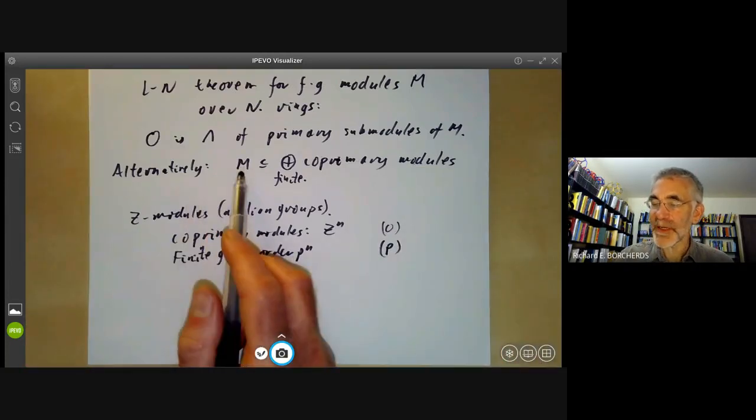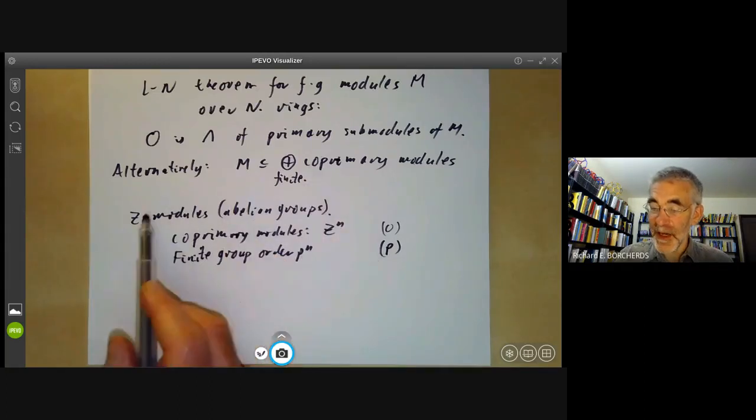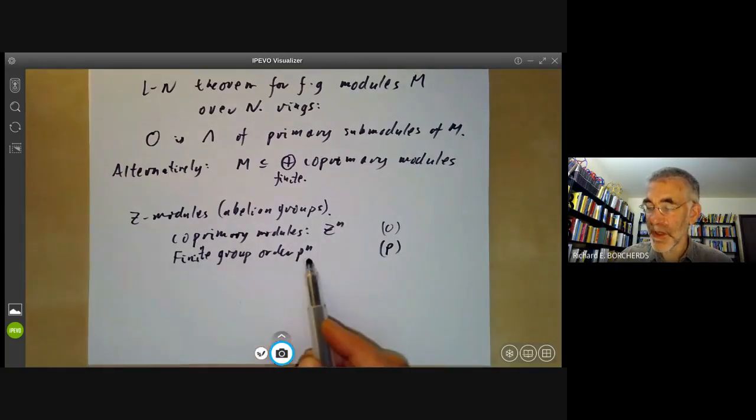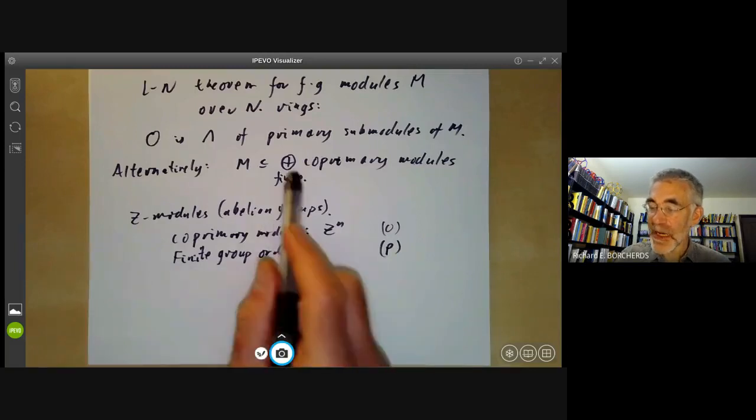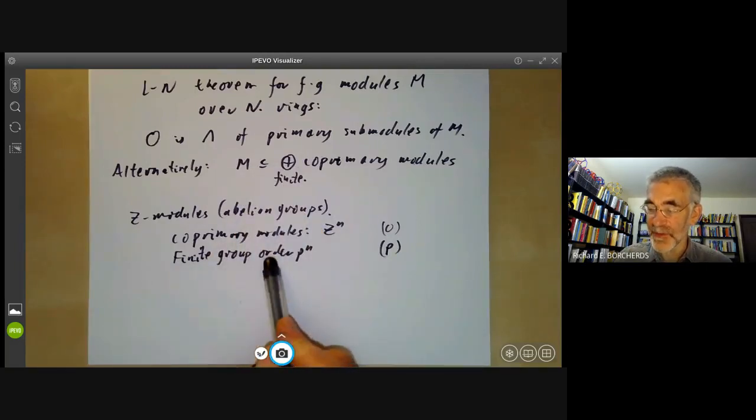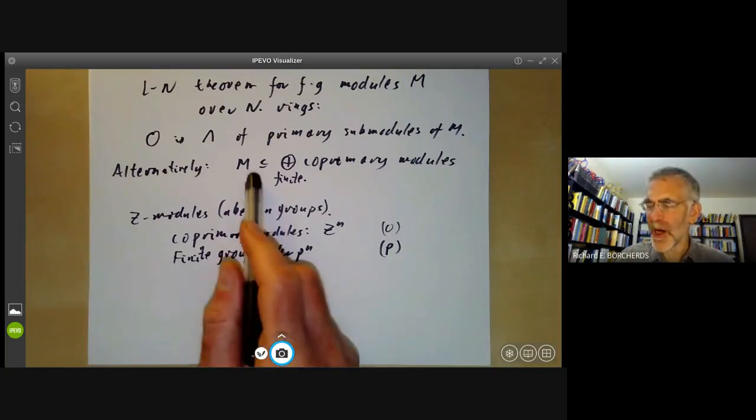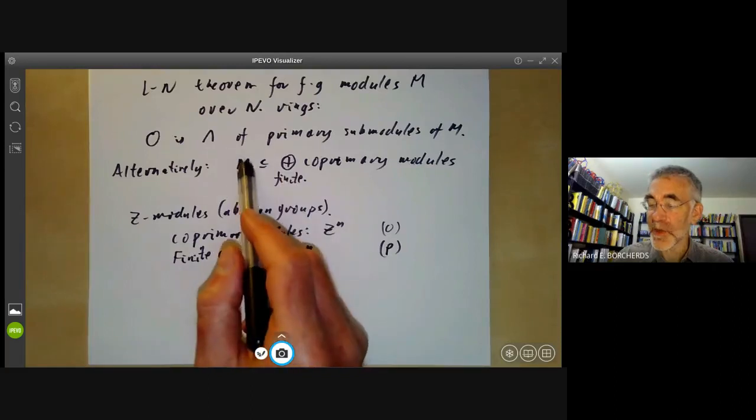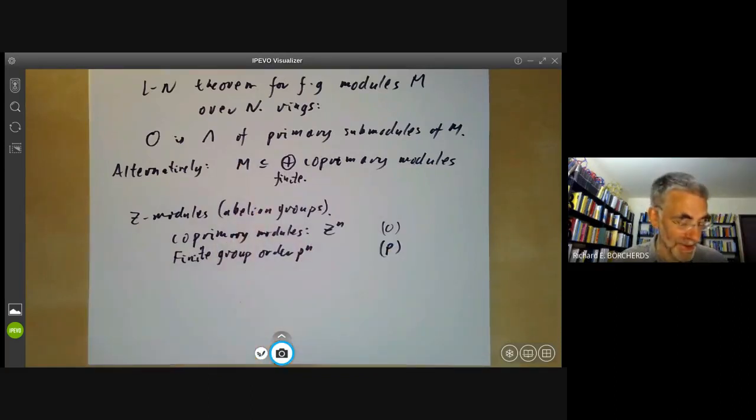So what this says is if you've got a finitely generated abelian group, it's contained in a direct sum of copies of Z and finite groups of prime power order. Well, if you remember the structure theorem for abelian groups, you've actually got a slightly stronger theorem. It's actually equal to a direct sum of free abelian groups and finite groups of order a power of p. Over arbitrary rings, you only get a containment; a module M is not generally equal to a direct sum of this form.